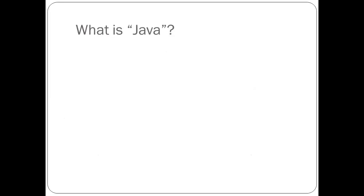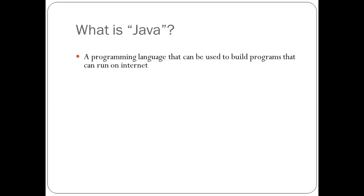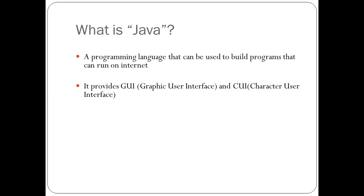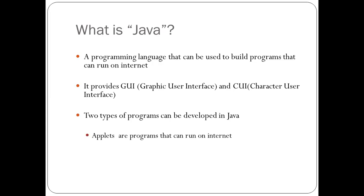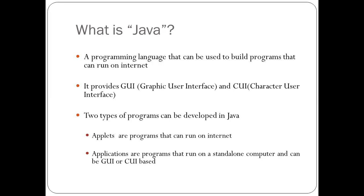Java is a programming language that can be used to build programs that can run on the internet. It provides both GUI — Graphical User Interface — and CUI — Character User Interface. Two types of programs can be developed in Java: Applets, which are programs that can run on the internet, and Applications, which are programs that run on a standalone computer and can be GUI or CUI based.